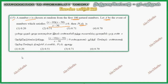Looking at the expression, one term is equal to 0. If we get equal to 0, then x minus 10 equals 0, so x equals 10. If we get equal to 0, then x equals 50. If we get equal to 0, then x equals 30.